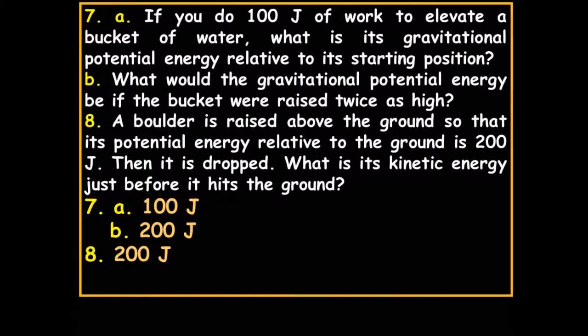If you do 100 joules of work to elevate a bucket of water, what is its gravitational potential energy relative to the starting position? It would be 100 joules. What would the gravitational potential energy be if the bucket were raised twice as high? It would be 200 joules — twice the original.